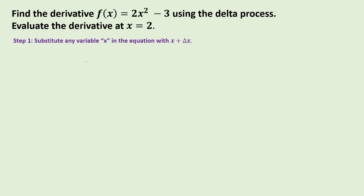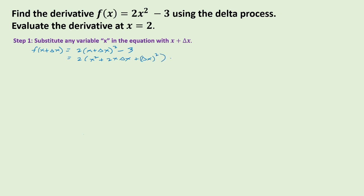Step one is to substitute any variable x in the equation with x plus delta x. So we have f of x plus delta x equal to two times the square of x plus delta x, which expands to x squared plus 2x delta x plus delta x squared, minus 3. This gives us 2x squared plus 4x delta x plus 2 delta x squared minus 3.